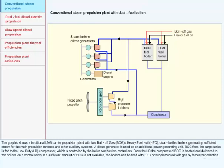A diesel generator is used as an additional power-generating unit. BOG from the cargo tanks is fed to the low-duty LD compressor which is controlled by the boiler combustion controllers. From the LD, the compressed BOG is heated and delivered to the boilers via a control valve.